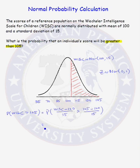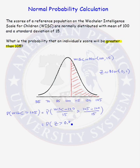How do we standardize a normal random variable? We need to subtract the random variable's mean and divide by its standard deviation. Subtracting the mean and dividing by the standard deviation converts that random variable to the standard normal random variable. We are now looking for the probability that Z is greater than 0.33. So we have that the probability that a WISC score is greater than 105 is equivalent to the probability that a standard normal random variable is greater than 0.33.